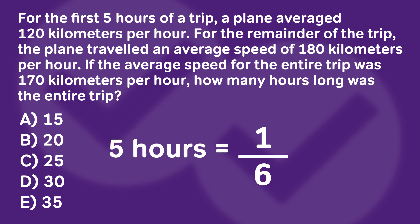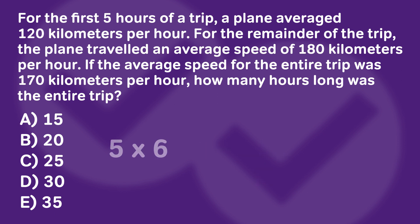To recap: I subtracted the two extremes, took the difference between one extreme and the average, and then flipped it around. I took the 1/6 and applied it to the other extreme, which was 120. We know from the question that five hours was spent at 120 kilometers per hour. Therefore, five hours is 1/6 of the trip, so the entire trip must be six times that — five times six — which is 30. Answer choice D.